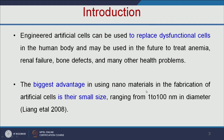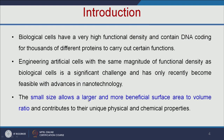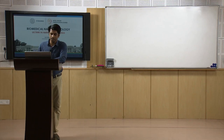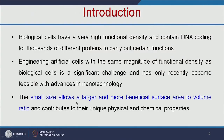The biggest advantage of using nanomaterials in the fabrication of artificial cells is their small size. Biological cells have very high functional density and contain DNA coding for thousands of different proteins to carry out certain functions. Engineering artificial cells with similar function is a significant challenge. With the help of nanotechnology, we could be able to achieve those challenges. The small size allows a larger and more beneficial surface area to volume ratio, which makes nanomaterials more beneficial for constructing artificial cells.